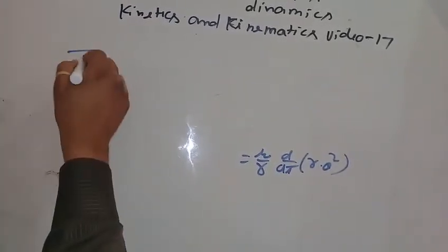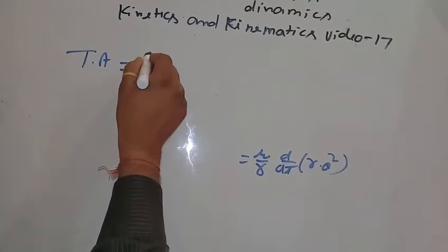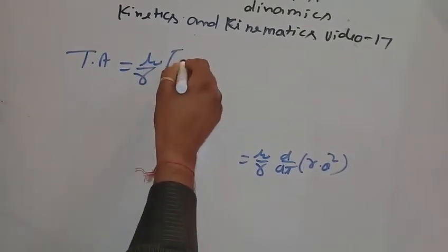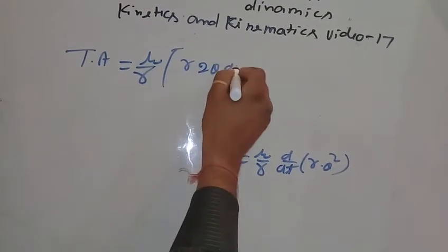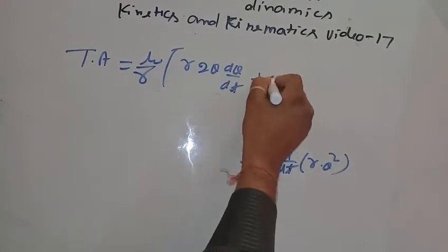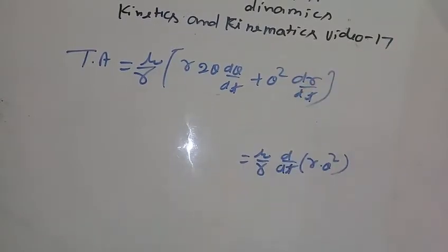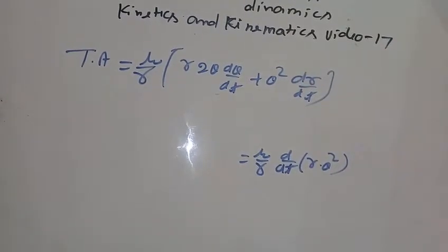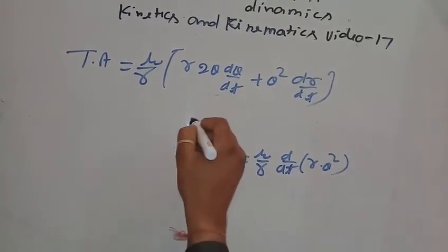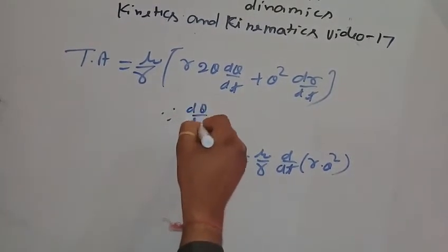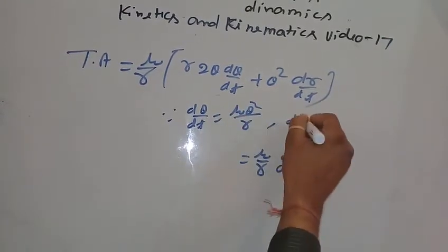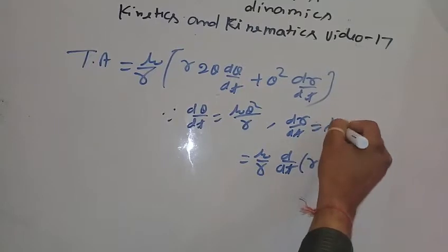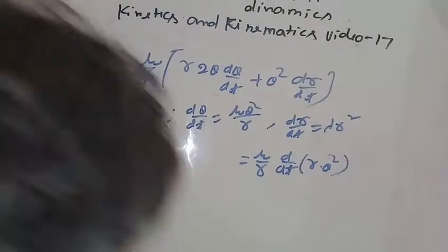Transverse acceleration equals mu by r times d/dt of r theta squared. Differentiating this, r theta squared gives 2 theta d theta/dt plus theta squared dr/dt. From equation two, d theta/dt is mu theta squared by r, and dr/dt is lambda r squared.